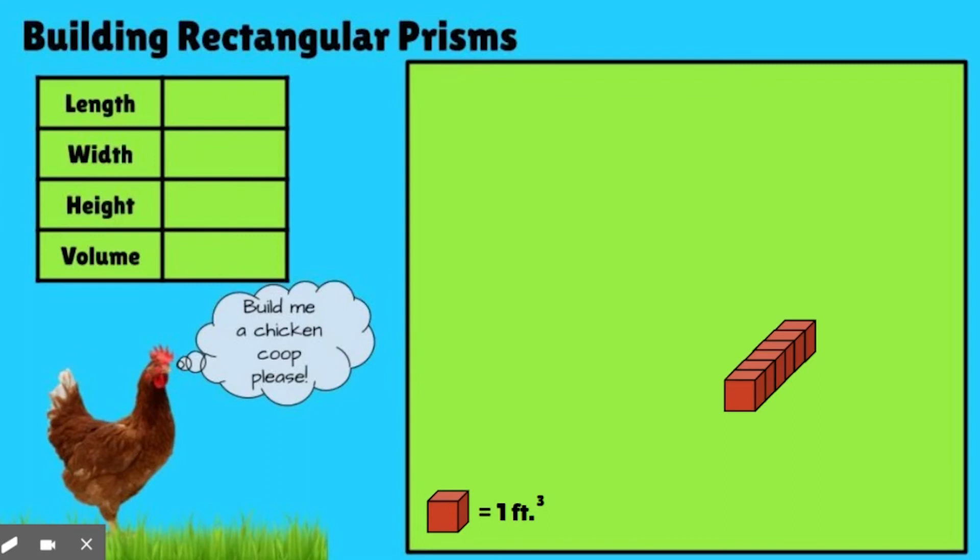So last one. Let's say I was wanting to build a cube. I want to build a cube chicken coop. So this is going to be the length of one side. So I want you to figure out what the volume would be. Go ahead and pause and see if you can do it.